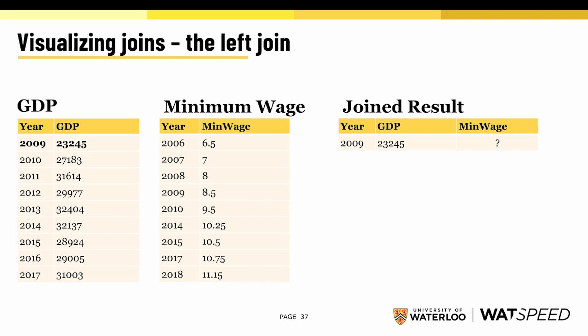We start with our first row — the year is 2009. We scan through the right-hand table: 2006 is not equal to 2009, 2007 is not equal to 2009, 2008 is not equal to 2009. But 2009 equals 2009, so we have a matching pair. In our output dataframe, we'll have the combination of 2009, the GDP, and the minimum wage. We'll continue to scan the table for any other years matching 2009.